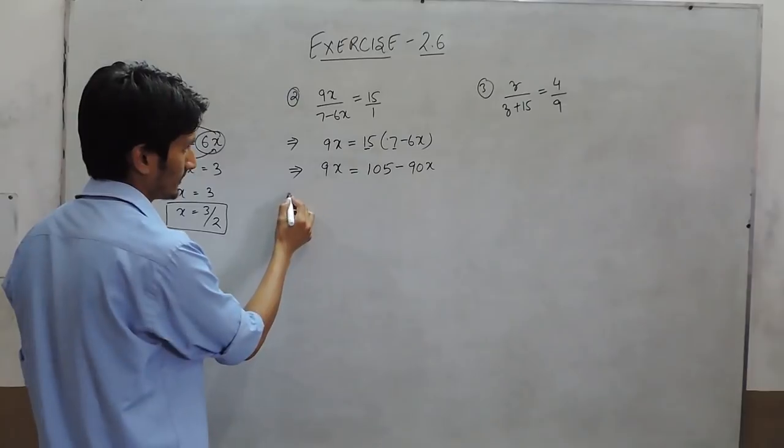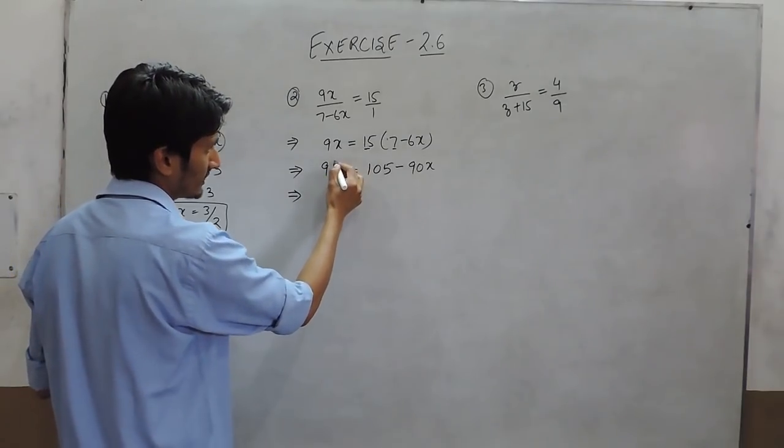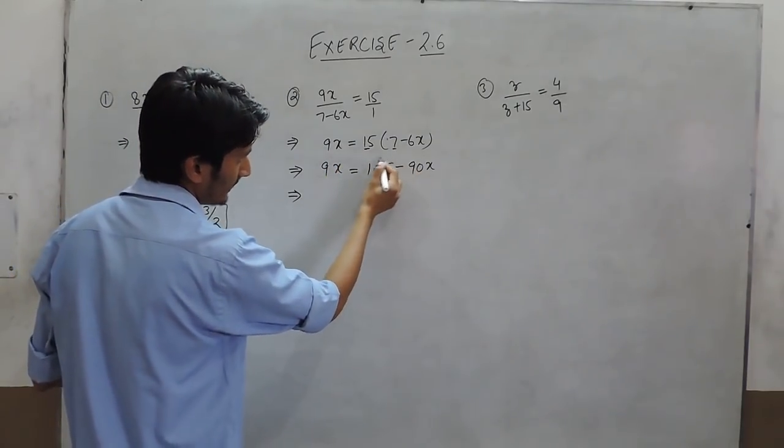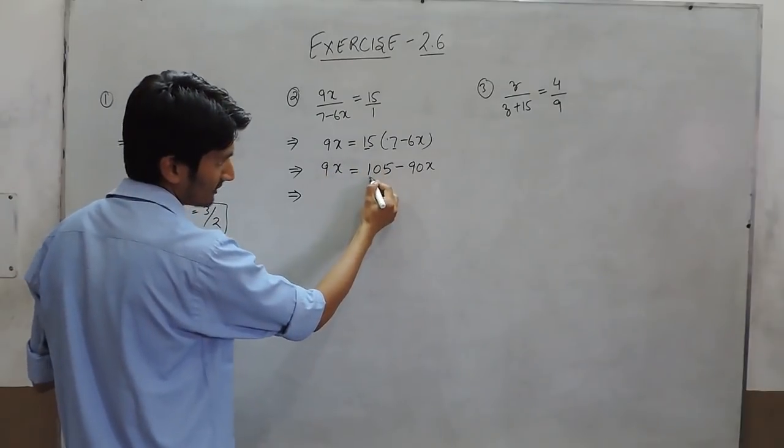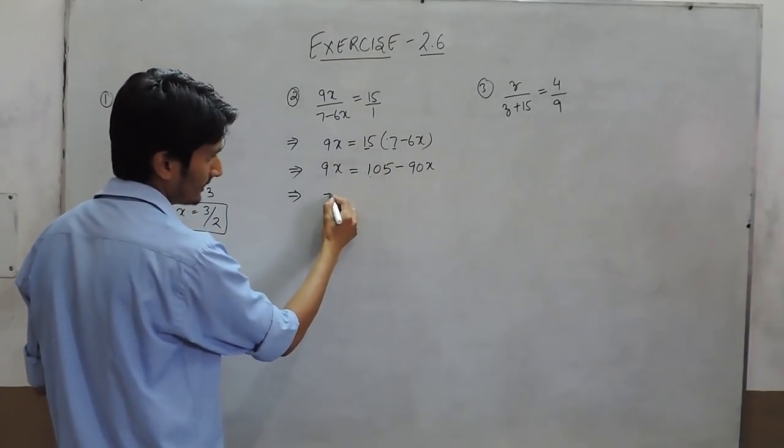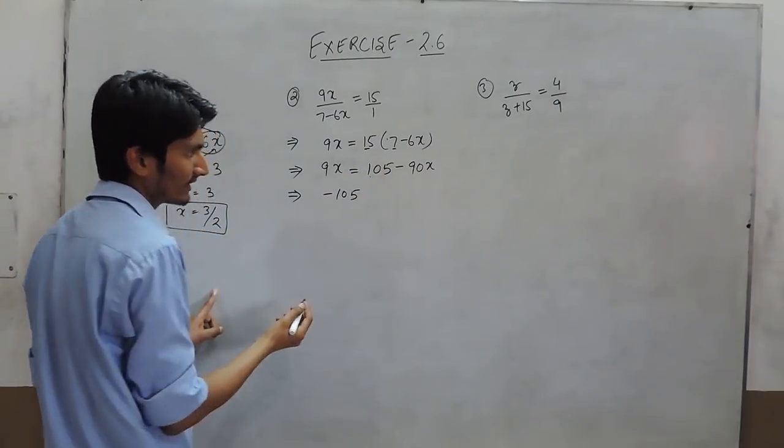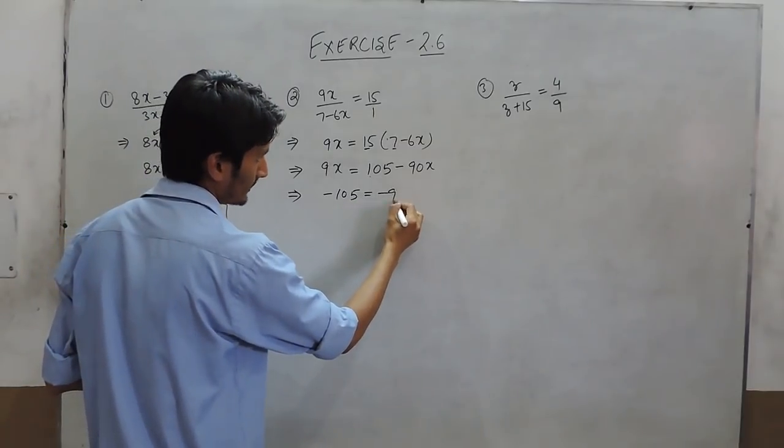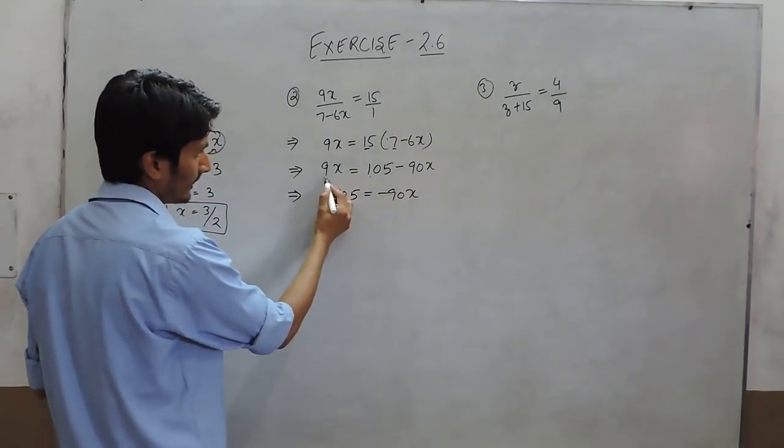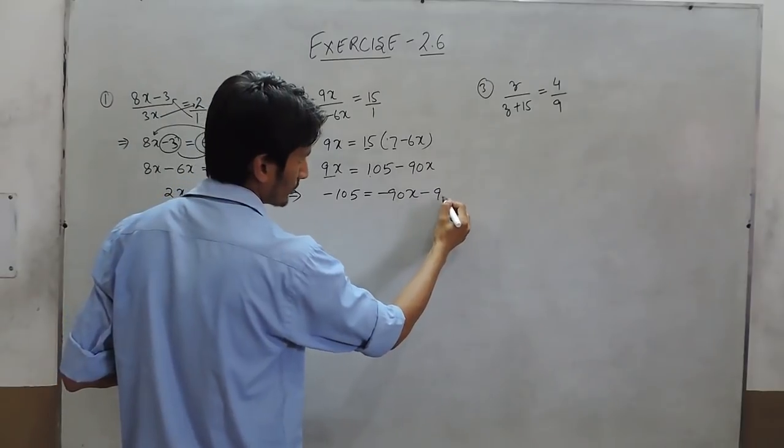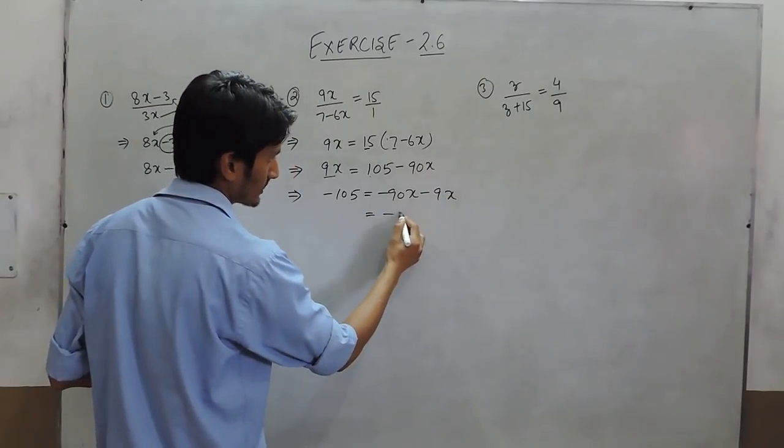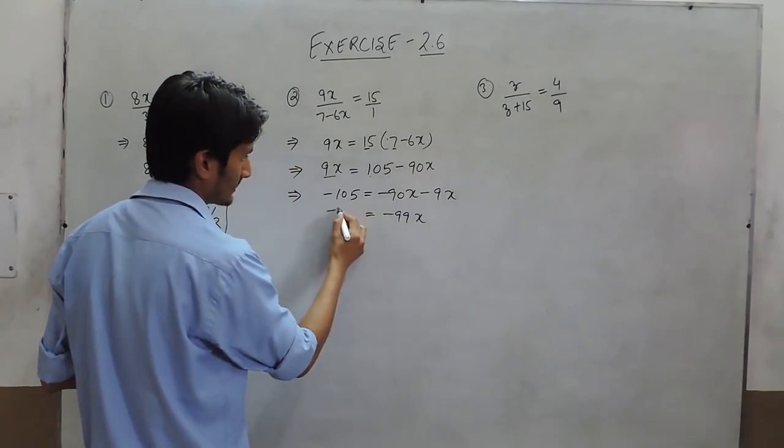Here it is 9x. So we can simply shift this variable to that side and this constant to this side. When this constant is shifted to this side, it will become minus 105. And this could be 90x. And this positive when shifted to that side will become negative. So this is 99x and this is 105.